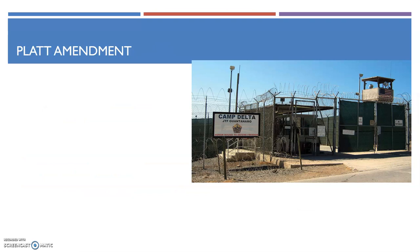So, the Platt Amendment. It doesn't sound very exciting, but it's how we basically get Guantanamo Bay. Guantanamo Bay was a hot topic at the height of the Iraq War and Afghanistan conflict, because this is where we put people captured on the field of battle — considered prisoners of war — but not given the same trial and judicial process, which makes it a really controversial issue. What you need to know is that the U.S. Army leaves Cuba in 1902 — sort of.